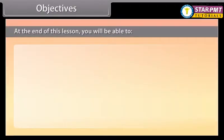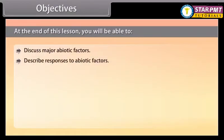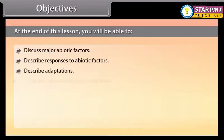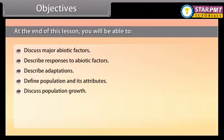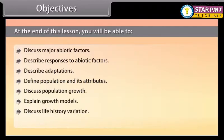At the end of this lesson you'll be able to: discuss major abiotic factors, describe responses to abiotic factors, describe adaptations, define population and its attributes, discuss population growth, explain growth models, discuss life history variation, and explain population interaction.